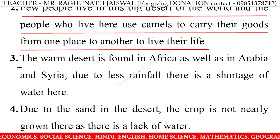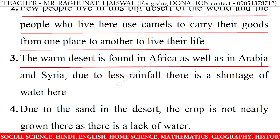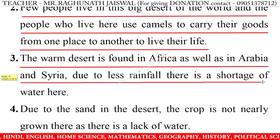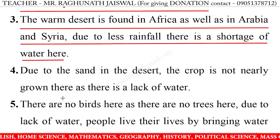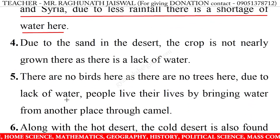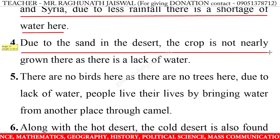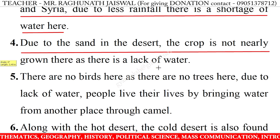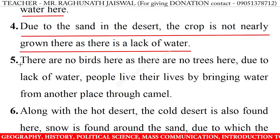11. The warm desert is found in Africa as well as in Arabia and Syria. Due to less rainfall, there is a shortage of water here. Due to the sandy terrain of the desert, crops are not easily grown here as there is a lack of water.